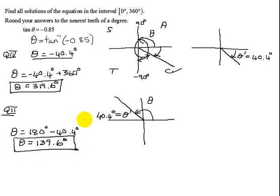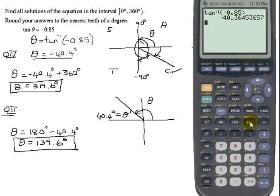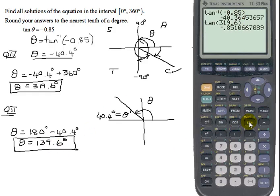So those are my two answers — 319.6 degrees and 139.6 degrees — angles between zero and 360 whose tangent is negative 0.85. Now let's check our work on the calculator. The tangent of 319.6 degrees is approximately negative 0.8510... Because I rounded an intermediate value, this won't give exactly the number we started with, but it's very close. Checking 139.6 degrees: the tangent of 139.6 degrees also gives approximately negative 0.85. Both answers check out.